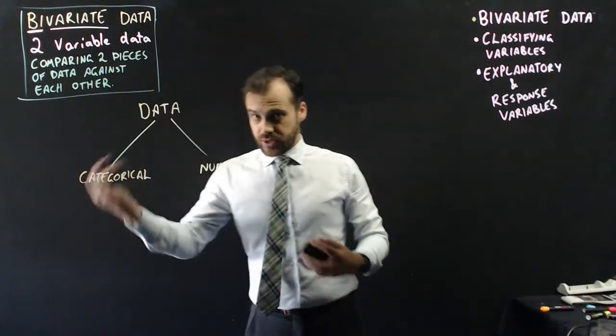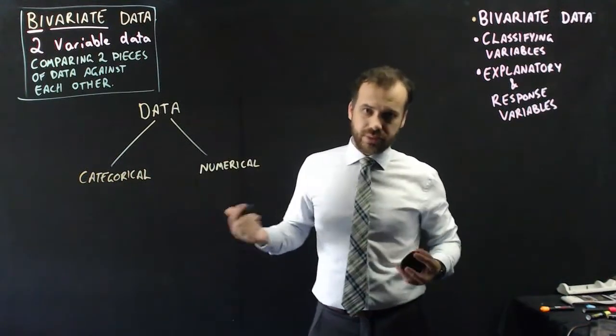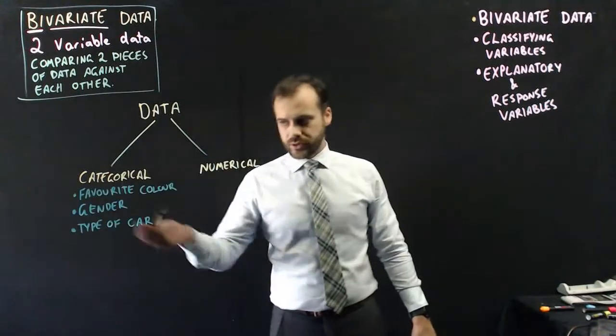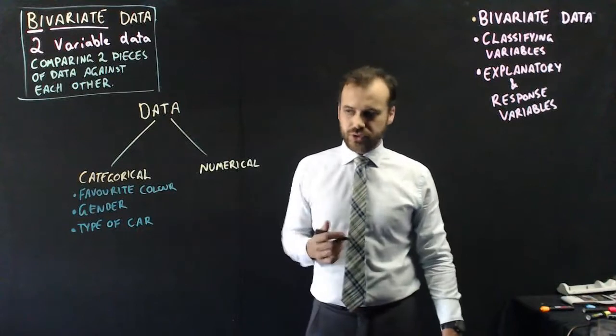So you need to compare two pieces of data against each other. And you should remember that data is broken into roughly two categories. We have categorical data - things in categories - and we have numerical data, things that can be measured with numbers. Categorical things like favourite colour, your gender, or the type of car you drive to school every day.